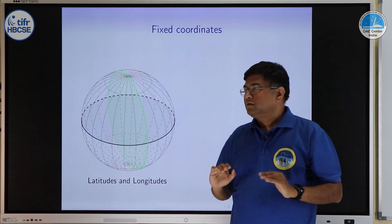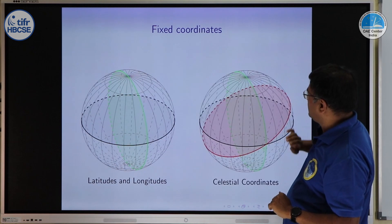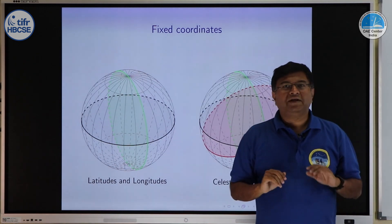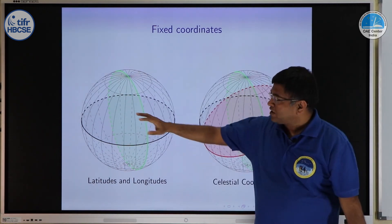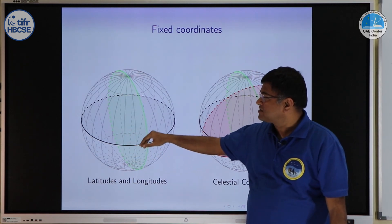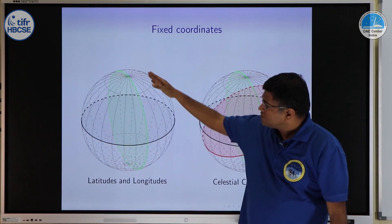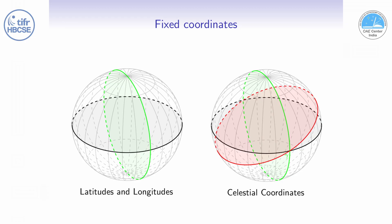We call it equatorial coordinate system. For that we need references. For latitudes and longitudes we had two references, one was our equator second was Greenwich meridian. For this celestial system we again use two references. The black circle here is celestial equator which is nothing but projection of earth's equator on celestial sphere and for the vertical reference we use this green line.